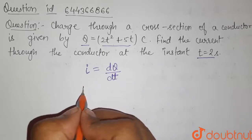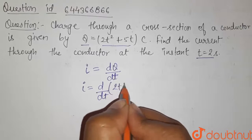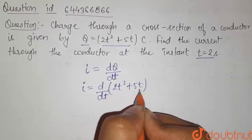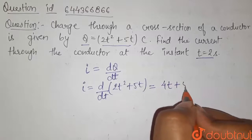So here i will be d by dt of 2t square plus 5t. So on differentiation it will be equals to 4t plus 5.